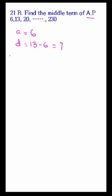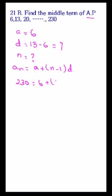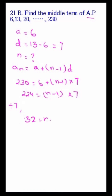We need to find the total number of elements, that is N. Using the formula AN is equal to A plus N minus 1 into D, where AN is 230. So 230 equals 6 plus N minus 1 into 7. That gives 224 equals N minus 1 into 7. Dividing by 7, we get 32 equals N minus 1, so N is equal to 33.